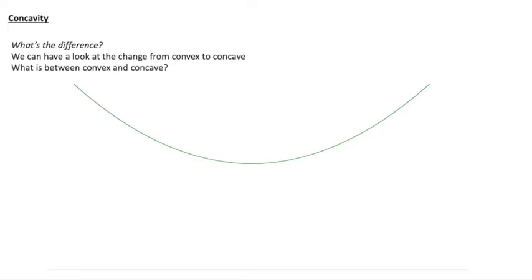Okay, so what's the difference? And it's quite interesting to have a look at the change from convex to concave. So we have a convex function and it's gradually going to change and we can see it flattening out. So what do we call a function that is neither convex nor concave? And you would have seen, as that little video proceeded, that we get a straight line between them.